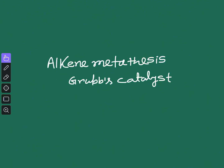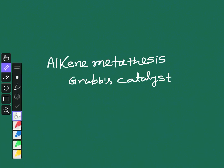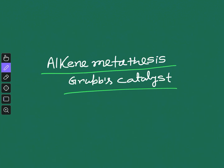Welcome to Chemistry Lover. This is the series '100 Important Topics in Organic Chemistry,' and in this video I'm going to talk about another important and interesting topic: alkene metathesis, which is done by Grubbs catalyst.